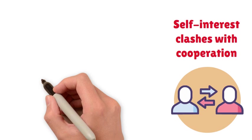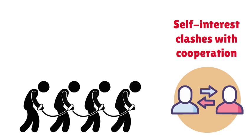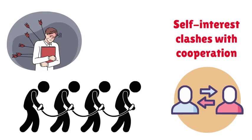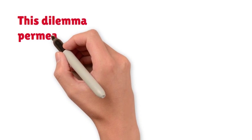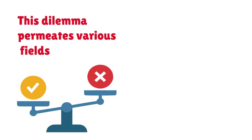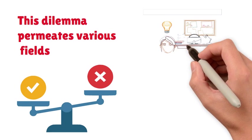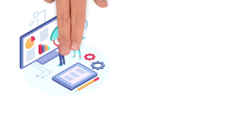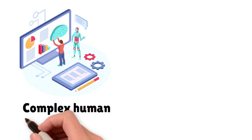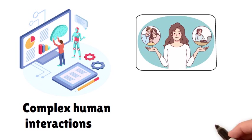Each prisoner, acting in their own best interest, is incentivized to betray the other. Yet if both betray, they collectively suffer worse outcomes than if they had cooperated. This dilemma permeates various fields, from economics to ethics, reflecting real-life scenarios like business competition or environmental conservation. Its allure lies in its reflection of complex human interactions, underscoring the delicate balance between personal gain and communal well-being.